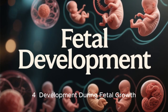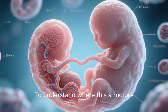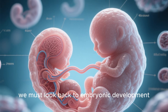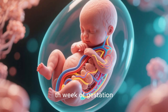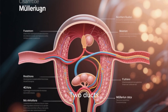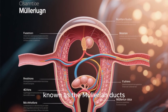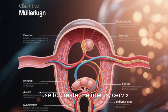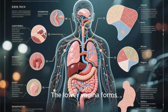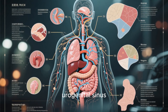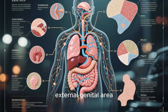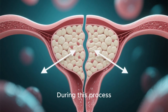Development during fetal growth. To understand where this structure comes from, we must look back to embryonic development. Between the 6th and 20th week of gestation, the internal female reproductive organs begin to form. Two ducts, known as the Müllerian ducts, fuse to create the uterus, cervix, and upper portion of the vagina. The lower vagina forms from a structure called the urogenital sinus, which connects the developing internal organs to the external genital area.